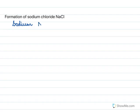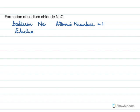Sodium has the symbol Na and its atomic number is 11. Hence its electronic configuration — what we mean by electronic configuration is the distribution of its electrons — involves three shells: K, L, and M.